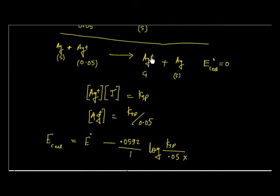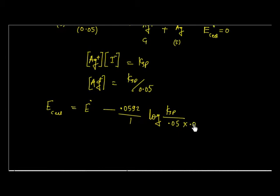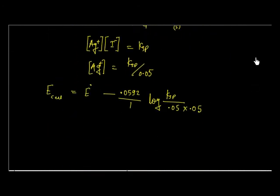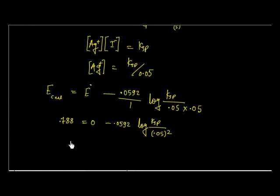This will go into the numerator and this will go into the denominator. So the numerator is Ksp divided by 0.05 and the denominator is again 0.05. So this I have to multiply by 0.05. So E cell is 0.788 volt, and E° is 0, minus 0.0592 times log of Ksp divided by 0.05, raised to the power 2.